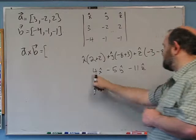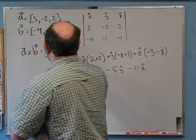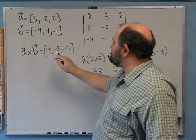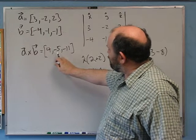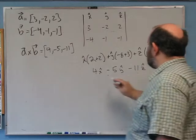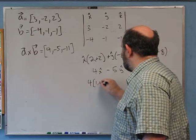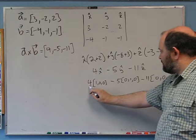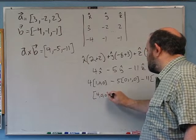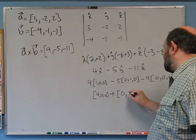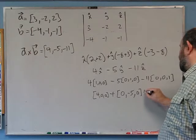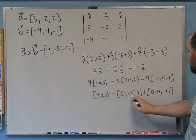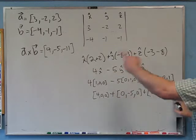So A cross B = (4, -5, -11). Notice — don't write x-hat, y-hat, z-hat inside the brackets. This notation means a vector whose x-component is 4, y-component is -5, z-component is -11. Remember x-hat = (1,0,0), y-hat = (0,1,0), z-hat = (0,0,1). Multiplying out: 4×(1,0,0) + (-5)×(0,1,0) + (-11)×(0,0,1) = (4, -5, -11). That's A cross B.